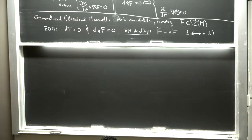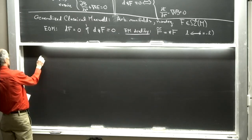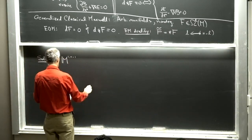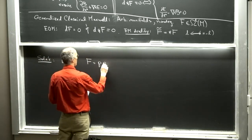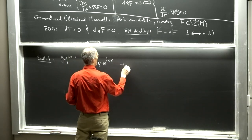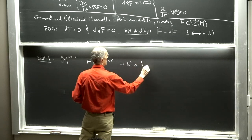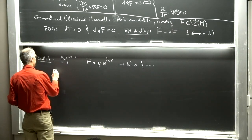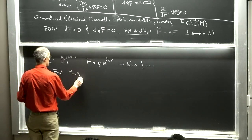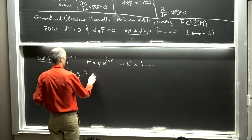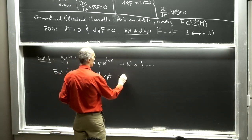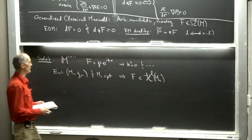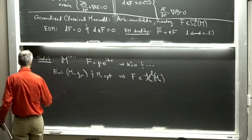Let's look at solutions of the equations of motion. On n-dimensional Minkowski space, a natural ansatz is some constant p-form times e^{ik·x}, and the equations imply k² = 0. We'll be thinking about Euclidean space. With Euclidean signature and M^n compact, the equations of motion imply that F is a harmonic form. Let me take a moment to say something about harmonic forms.